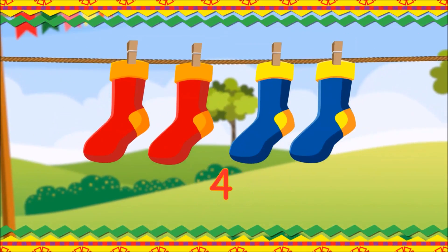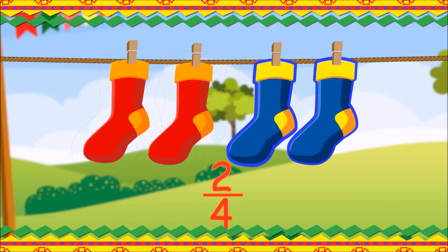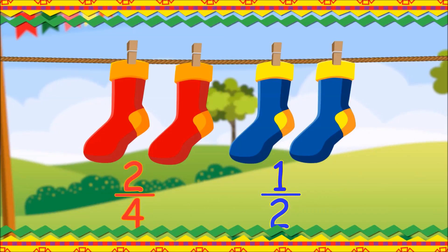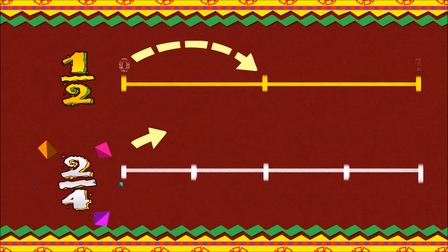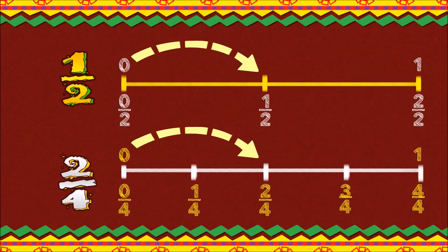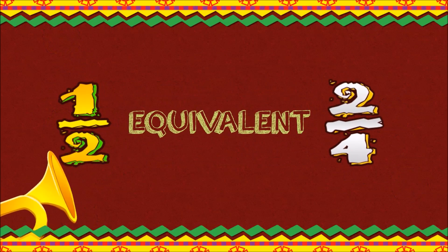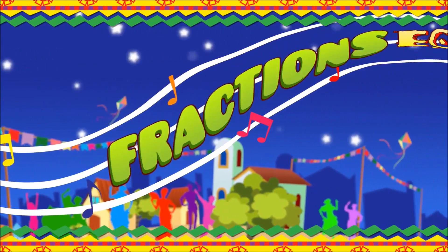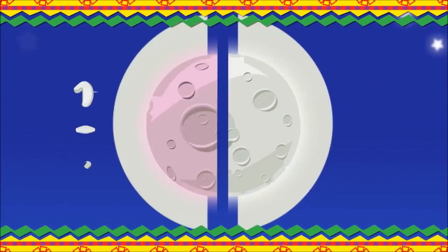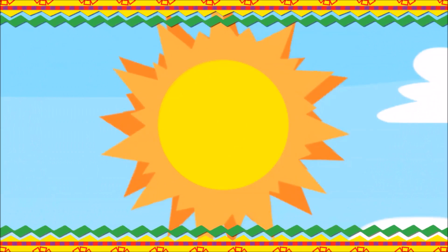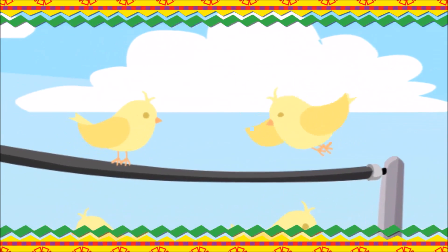If there were four socks to wear, then we would say there'd be two in each pair. And one of the two pairs we can declare equals two-fourths of all the socks. Drawing one-half and two-fourths on a number line shows they can be described with an equal sign — an equal value is what they're worth. So we say one-half is equivalent to two-fourths. Equivalent fractions is the name for fractions whose values are the same.